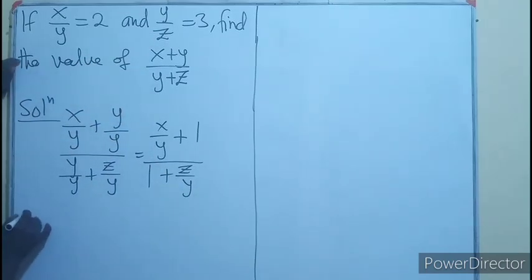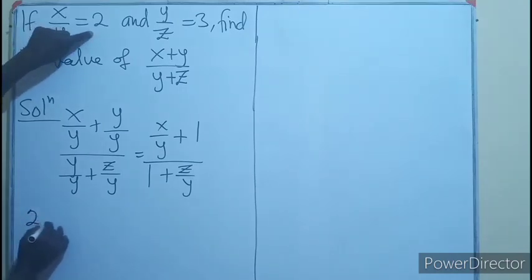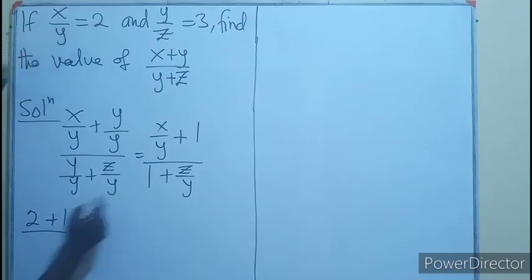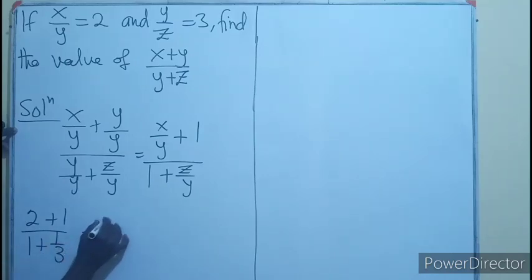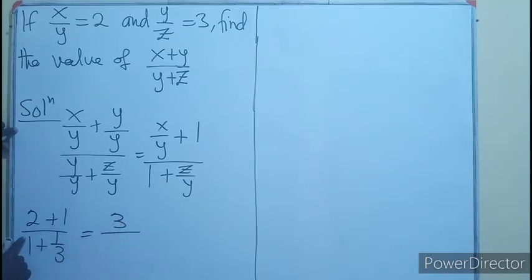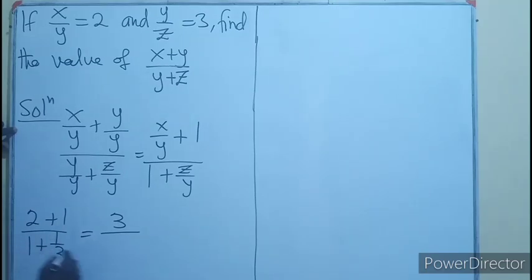So this will be 2, which is this, plus 1 over 1 plus this will become 1 over 3, which is the reciprocal of this. And we know that this could also mean 3 over 3, and 3 over 3 is the same as 1. So I'll add the numerators. That will give you 4 over 3. What happens here?